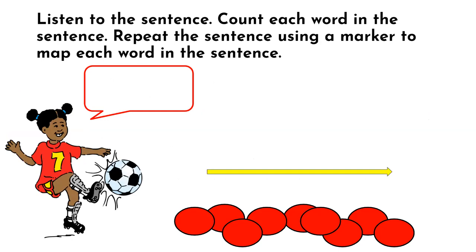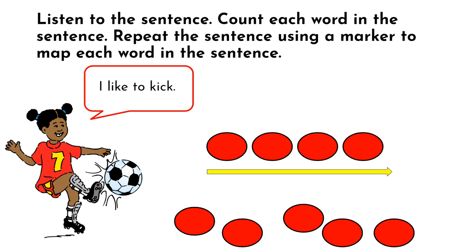Let's try out a word awareness activity. When completing this with children, they would not see the words—they would hear them spoken and push up a red marker for each word. The directions are: listen to the sentence, count each word in the sentence, and repeat the sentence using a marker to map each word. For example: I like to kick. Be sure to point to the four red markers moving from left to right to repeat the sentence, which will reinforce one-to-one correspondence.